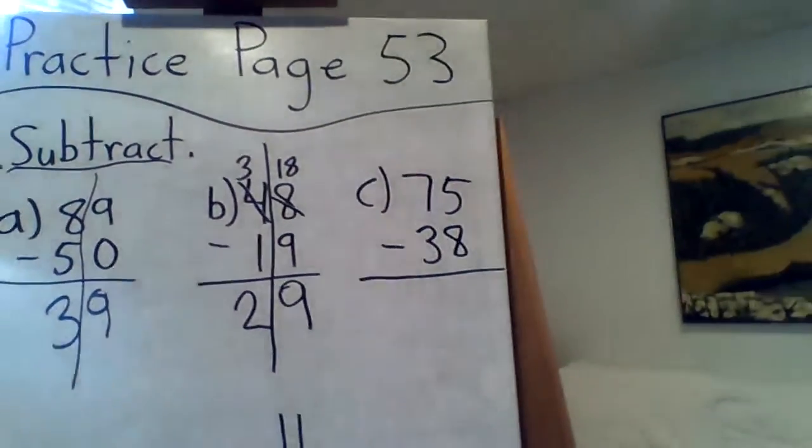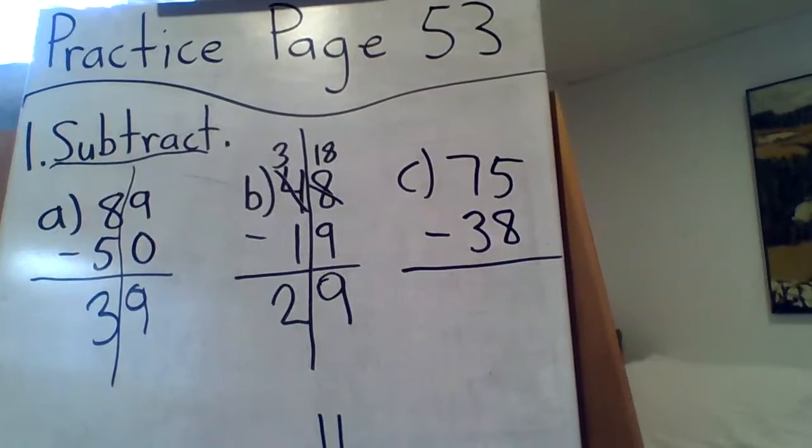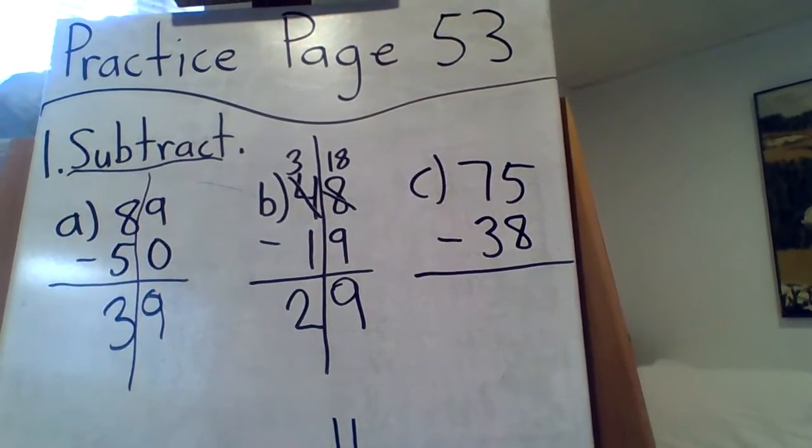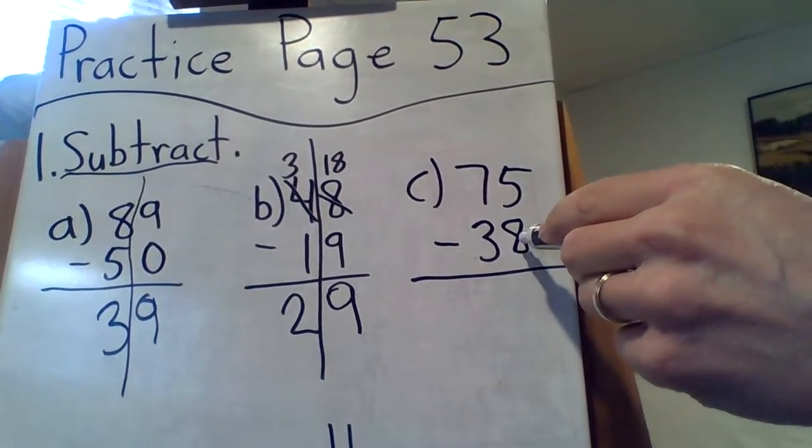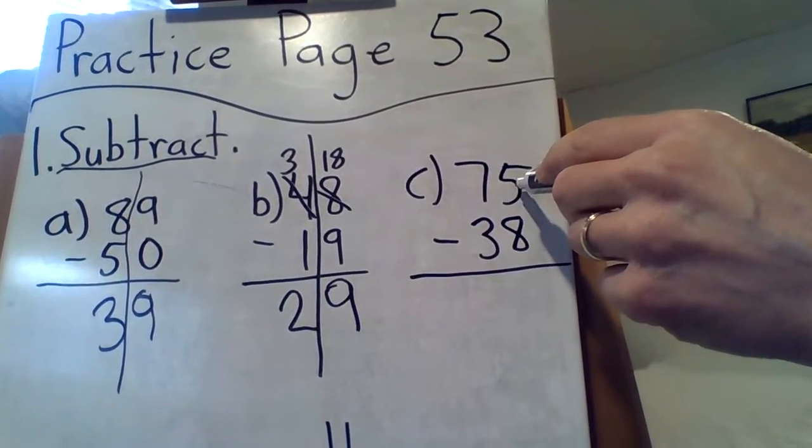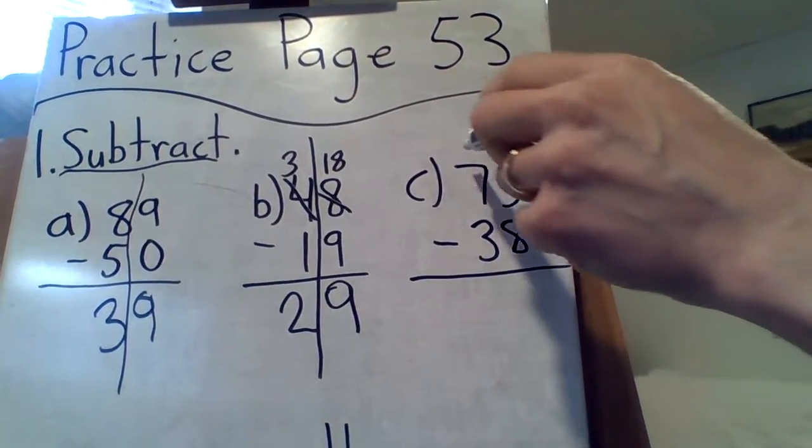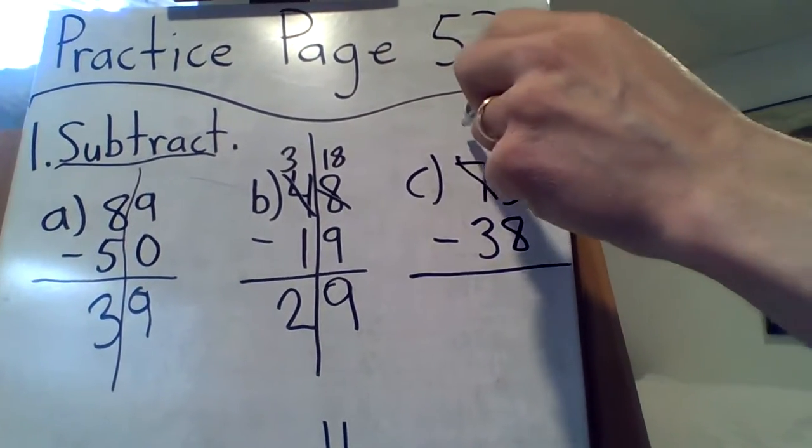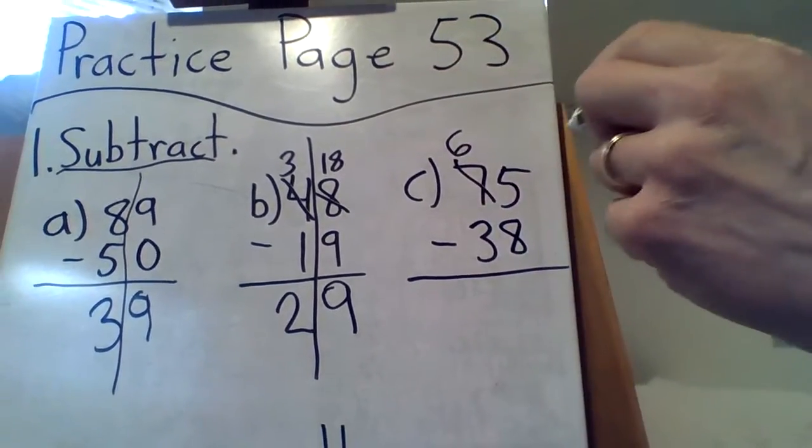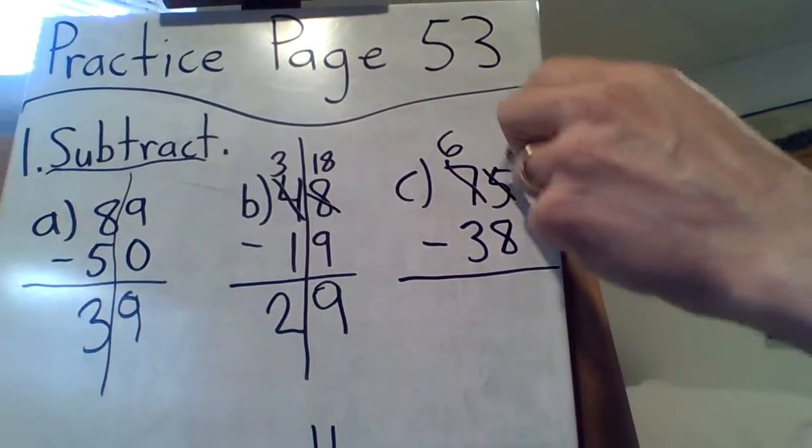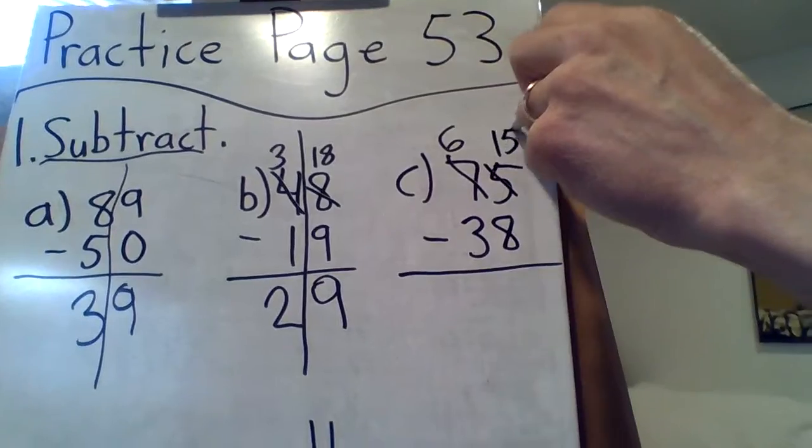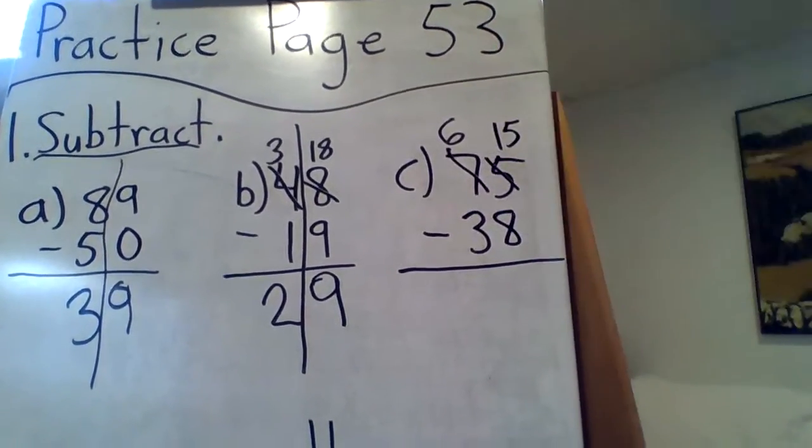There we go. Let's go on to C. C says 75, take away 38. Ooh, again. Can't take 8 when there's only 5 there. So we better borrow from the 7. Make that a 6. 6 tens, so 60. And that 5 turns into 15. Because 60 and 15 is still 75.